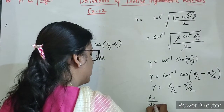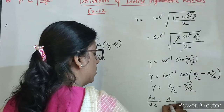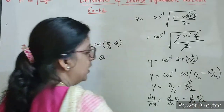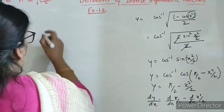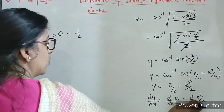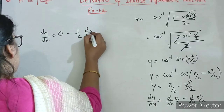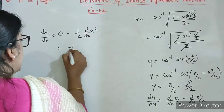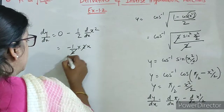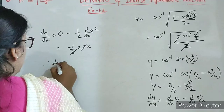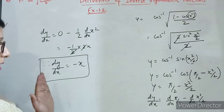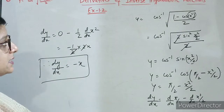Now differentiating on both the sides: d by dx of pi by 2 minus d by dx of x square by 2. Derivative of pi by 2 is 0. 1 by 2 constant derivative ke bahar aa jayega, and d by dx of x square is 2x, 2 cancel. Therefore dy by dx is minus x.